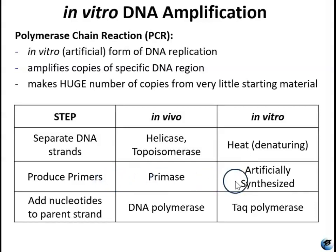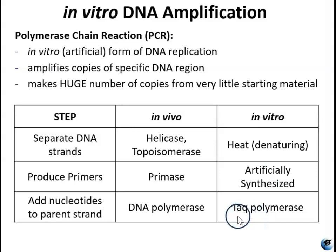As for making primers, you can actually synthesize primers in a lab. If you have a target region of DNA, you can synthesize a single strand of adenines, thymines, cytosines, and guanines that are complementary to the strand of DNA that you are targeting. For adding nucleotides to the parent strand, we use Taq polymerase — T-A-Q — the name comes from the bacteria from which it was isolated: Thermus aquaticus. Thermus aquaticus lives in hot springs, so it has DNA polymerase that can tolerate high temperatures, which we need because of the denaturation step where you're heating the DNA to separate the strands.